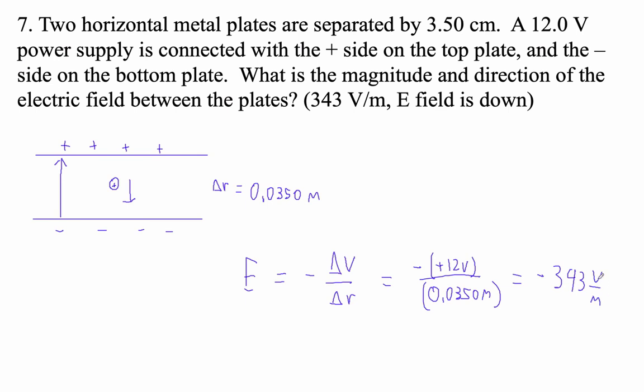In fact, it's more common to see volts per meter than newtons per coulomb. The fact that it's negative would in our little system here make it down. So it's 343 volts per meter and the electric field is down. Generally, in these types of problems I just draw a picture and figure it out from the picture.